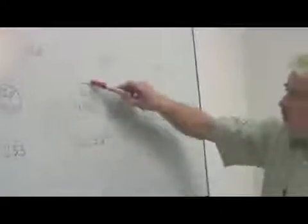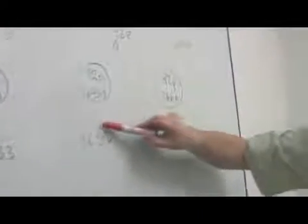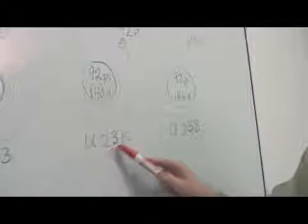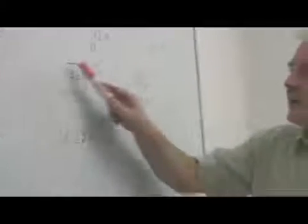Here, total of two hundred and thirty-five. So when they talk about U-two-three-five, it is the number of particles in the nucleus.